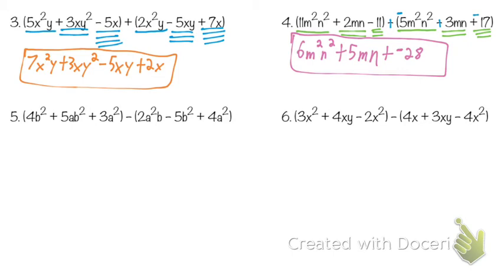As we look at number 5, we notice we have subtraction again. So what do we have to do with the subtraction symbol? We have to change it to addition and change the entire second side. So 2a squared b becomes negative, negative 5b squared becomes positive, and 4a squared becomes negative.